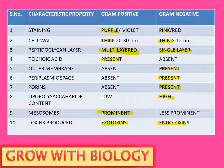Teichoic acid is present only in gram positive. Outer membrane is found in gram negative, and periplasmic space is also found in gram negative. Porins are found to be only in gram negative bacteria. Higher lipopolysaccharide levels are observed in gram negative.